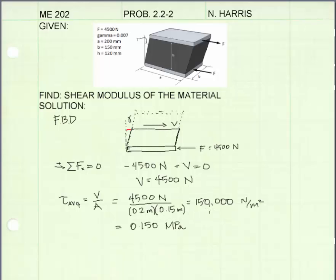Calculating average shear stress, I get 150,000 newtons per meter squared, which is equivalent to 0.150 megapascals. The final step is to use Hooke's law for shear stress and strain.